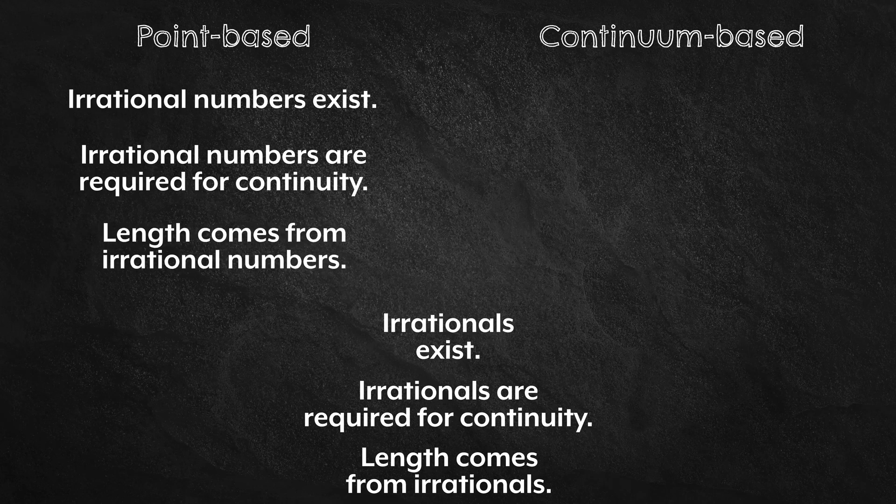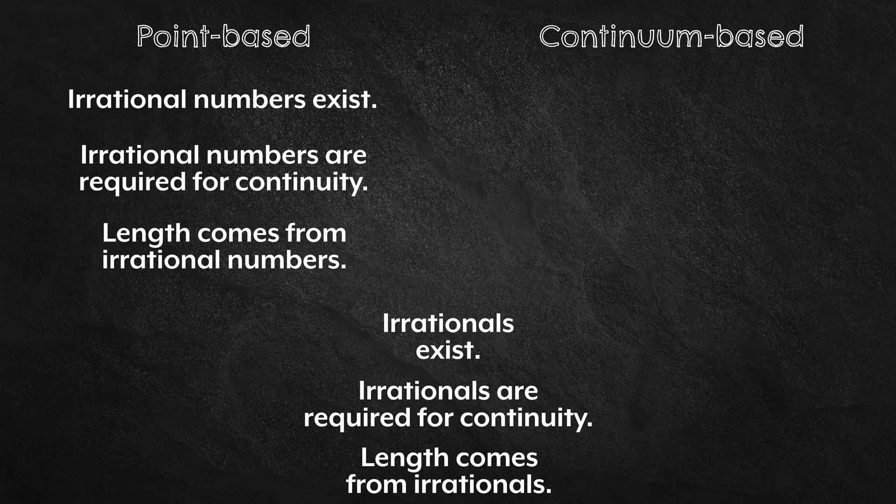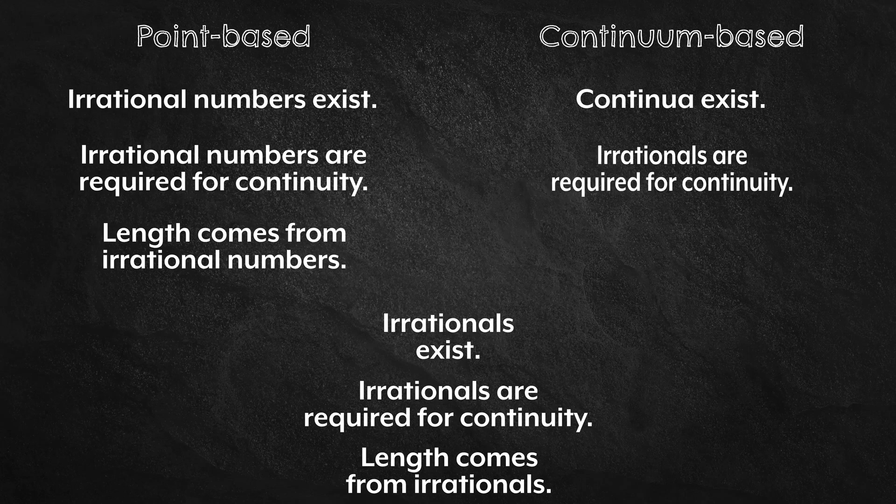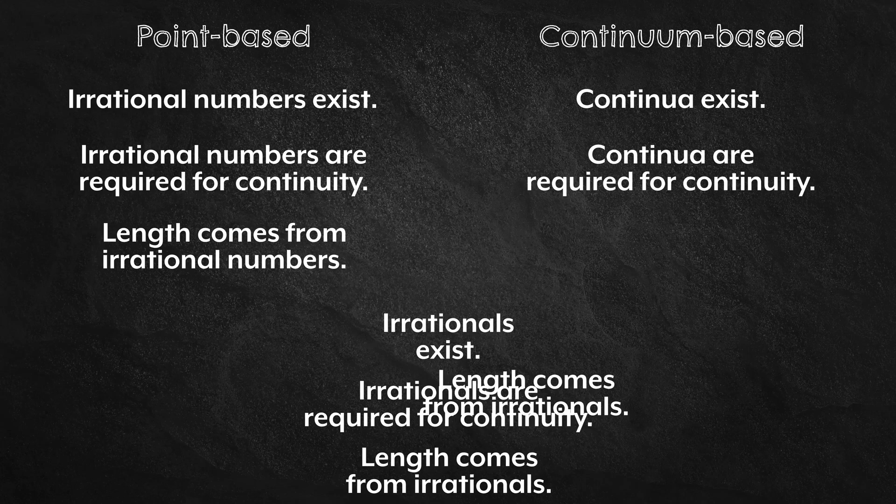So it is natural to interpret these as proofs that irrational numbers exist, that irrational numbers are required for continuity, and that length comes from irrational numbers. But with a continuum-based view, the fundamental objects are continua. So it is natural to interpret these as proofs that continua exist, that continua are required for continuity, and that length comes from lines.